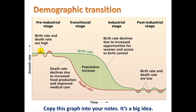In the pre-industrial stage, birth rate and death rate are both high — an undeveloped country with stable population. The transitional stage is when a country is becoming developed: death rate declines due to increased food production and improved medical care, but birth rate stays high, so you get a booming population. In the industrial stage, birth rate begins to decline due to increased opportunities for women and access to birth control, and birth and death rates begin to catch up with each other. In the post-industrial stage, both birth rate and death rate are low, giving a stabilized population again.